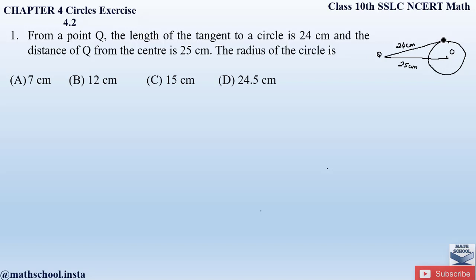The radius is always drawn from the center of the circle to the circle. Here we have a radius and a tangent drawn to the circle. From theorem 4.1, we know that the radius to a circle is always perpendicular to its tangent. So it makes a 90-degree angle, and we can observe a right-angle triangle is formed. Since we know two sides and need to find the third side — the radius — we will apply Pythagoras theorem.